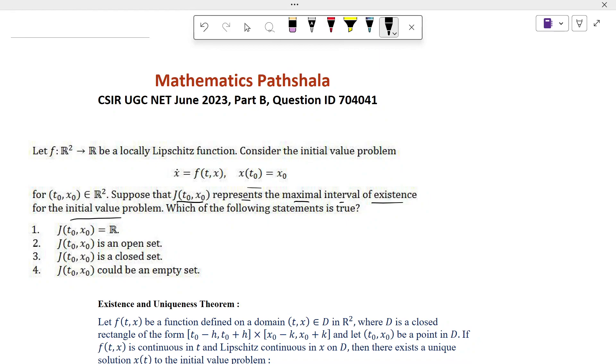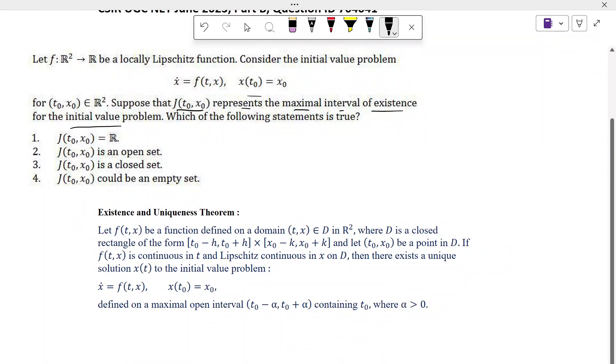Before doing the problem, we recall the Existence and Uniqueness Theorem. Let f(t,x) be a function defined on a domain (t,x) belongs to D in R² where D is a closed rectangle of the form [t0 minus h, t0 plus h] Cartesian product [x0 minus k, x0 plus k] and let (t0, x0) be a point in D.